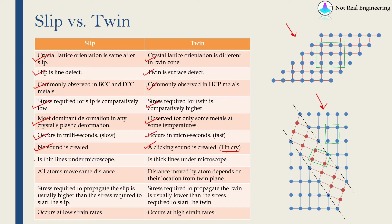Under a microscope, you can see slip as thin lines, but twinning is seen as thick lines. In slip, all atoms move the same distance — one atomic distance. But in twinning, the distance moved by an atom depends on its location from the twin plane. Stress required to propagate slip is usually higher than the stress required to start it. For twin, it is exactly the opposite — stress required to propagate twin is usually lower than the stress required to start it. Finally, slip occurs at low strain rates, but twinning occurs at high strain rates.